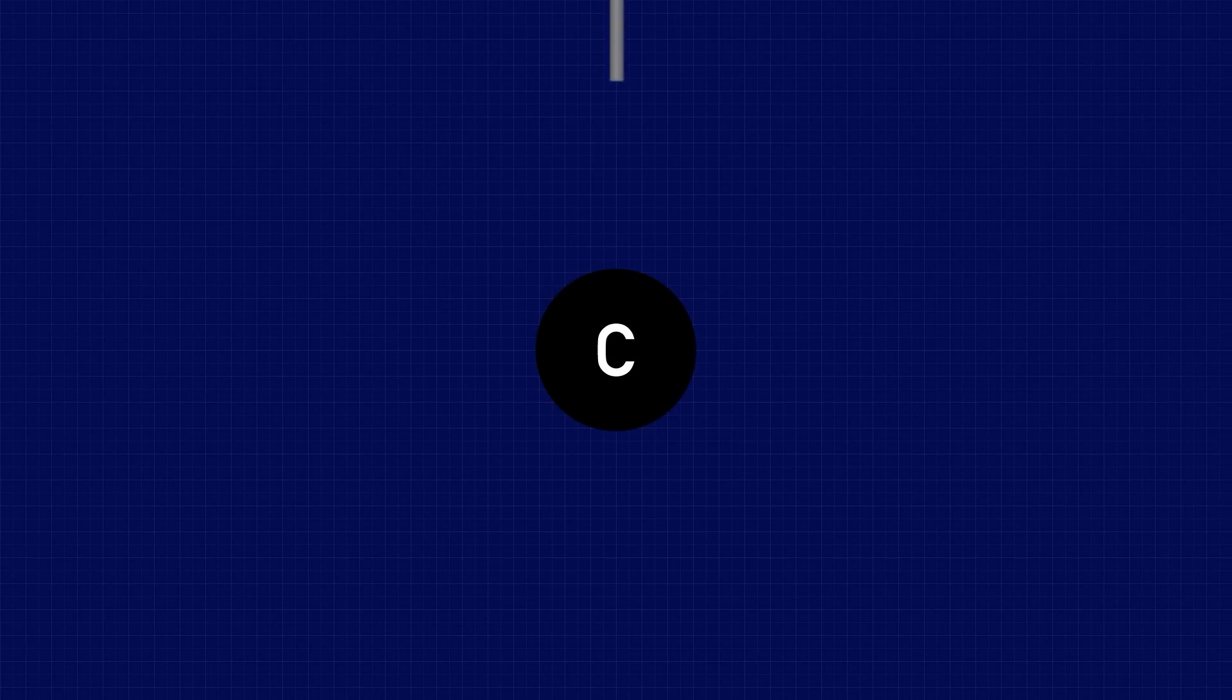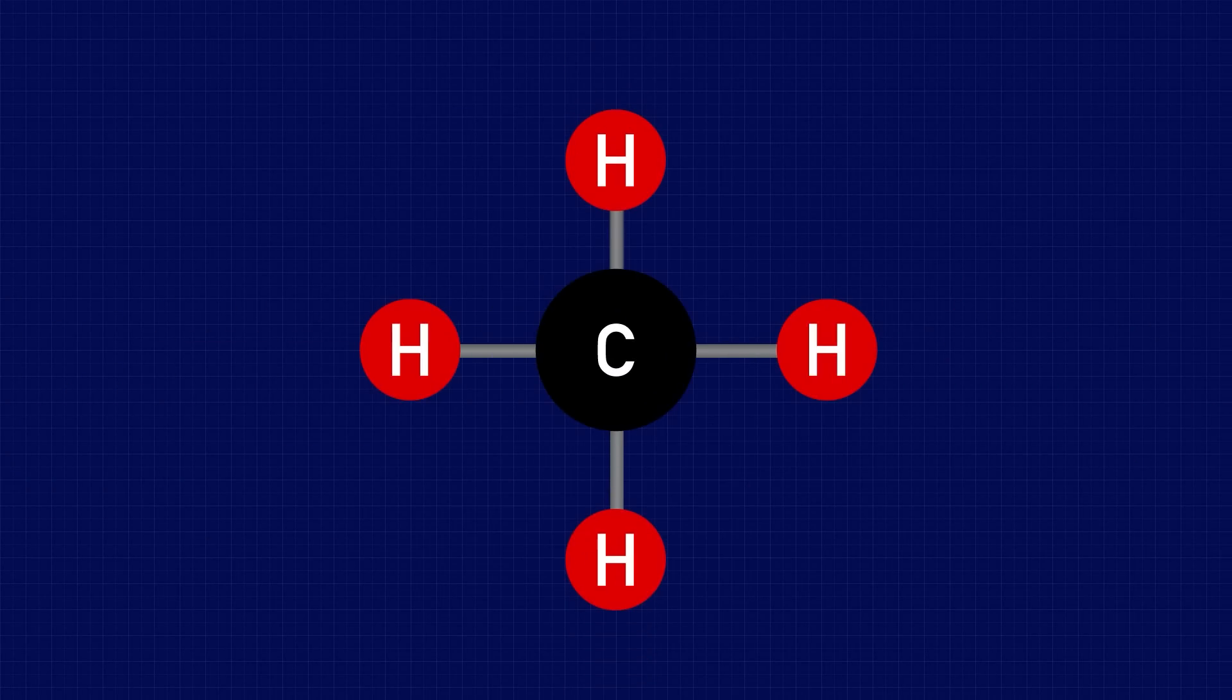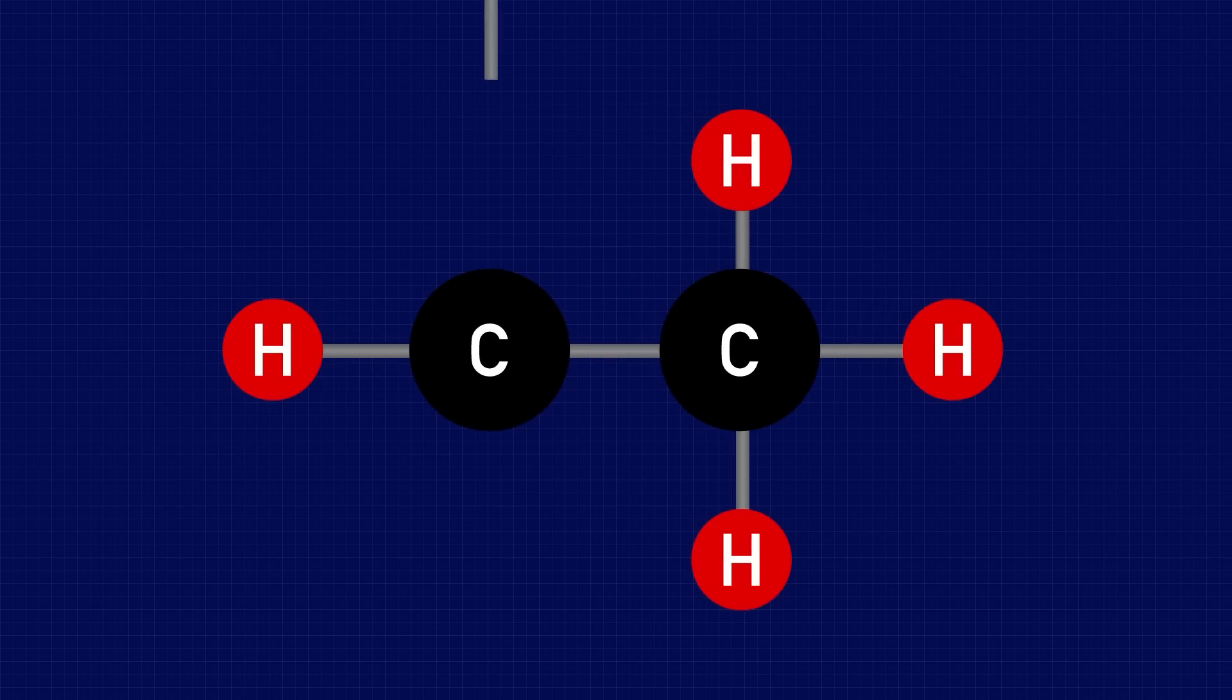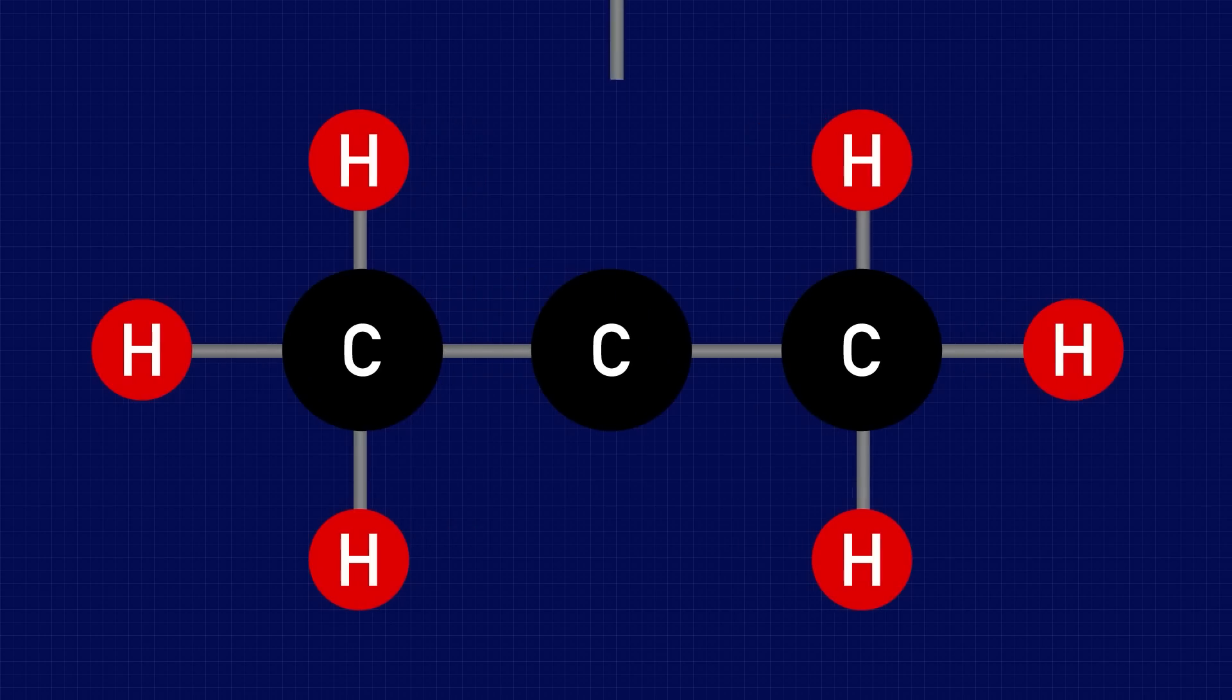The lightest is methane or liquefied natural gas which is a single carbon atom surrounded by four hydrogen atoms. To make the liquefied petroleum gases you simply add in additional carbon atoms with pairs of hydrogen atoms to get ethane, propane, butane and pentane.